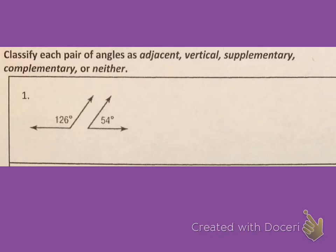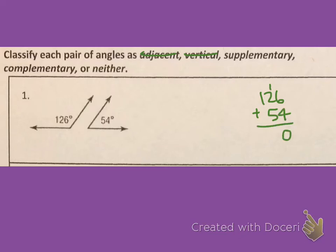Let's look at this first pair of angles together. I notice they are not right next to each other and do not share a common side, so they are not adjacent. They're not across from each other on intersecting lines, so they're not vertical. Supplementary means their angles add up to 180 degrees — and we do get 180 degrees, so they are supplementary. The only thing that describes these two angles well is supplementary.